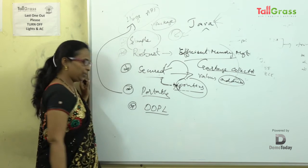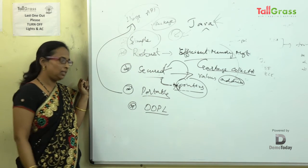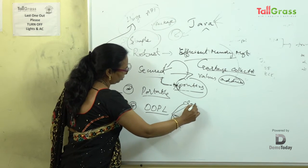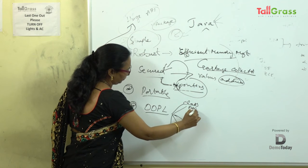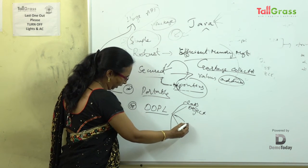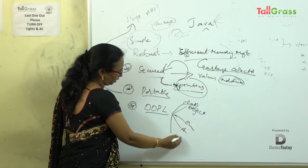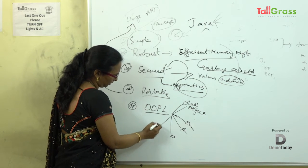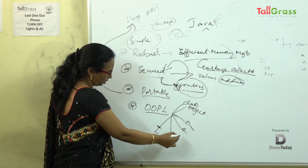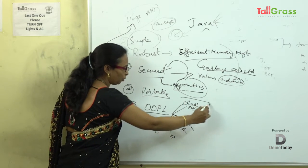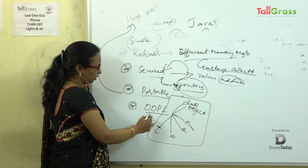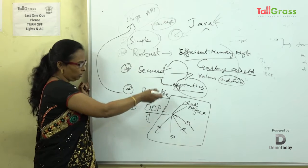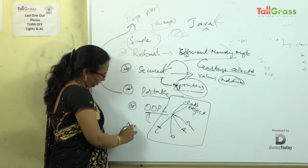Object-oriented means it has lots of features — around five or six. These include classes, objects, encapsulation, abstraction, polymorphism, and inheritance. When a programming language follows all these features, we call it an object-oriented programming language. Java follows all six of these.